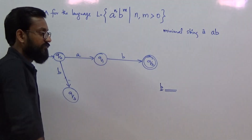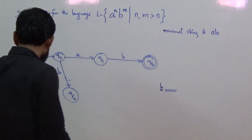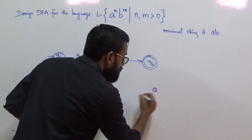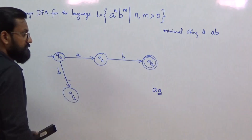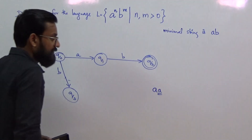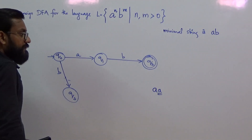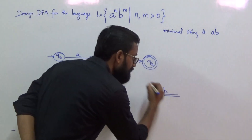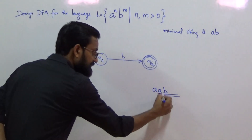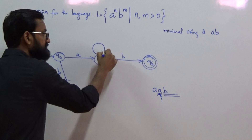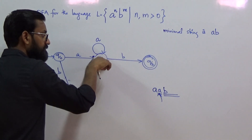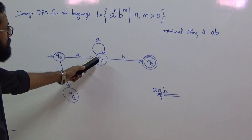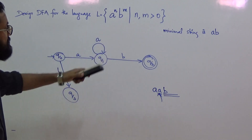Now consider the A transition for q1. The minimal string required to reach q1 from q0 is A. Now applying input A to q1, the current string consumed is AA. The remaining minimal string needed to make this valid is B only. So this A transition must go to a state from which it can consume exactly one B to reach the final state — meaning from q1, the A transition will remain in the same state q1.